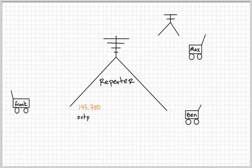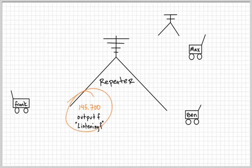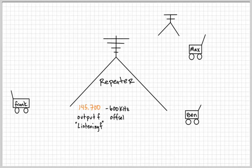If you want to know your local repeater, you're going to need some numbers like the output frequency or the listening frequency. If you go online and try to find your local repeater, it gives you a frequency — that's the listening frequency. You'll also have another number called the offset. This creates the input frequency or the talk frequency.